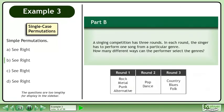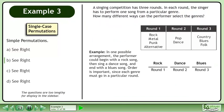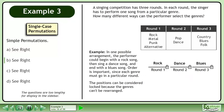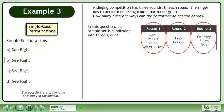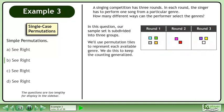In Part B, a singing competition has 3 rounds. In each round, the singer has to perform one song from a particular genre. How many different ways can the performer select the genres? In one possible arrangement, the performer could begin with a rock song, then sing a dance song, and end with a blues song. Order is important since each genre must go in a particular round. The positions can be considered locked because the genres can't be rearranged. Our sample set is subdivided into 3 groups, and we'll use permutation tiles to represent each available genre to keep the counting generalized.